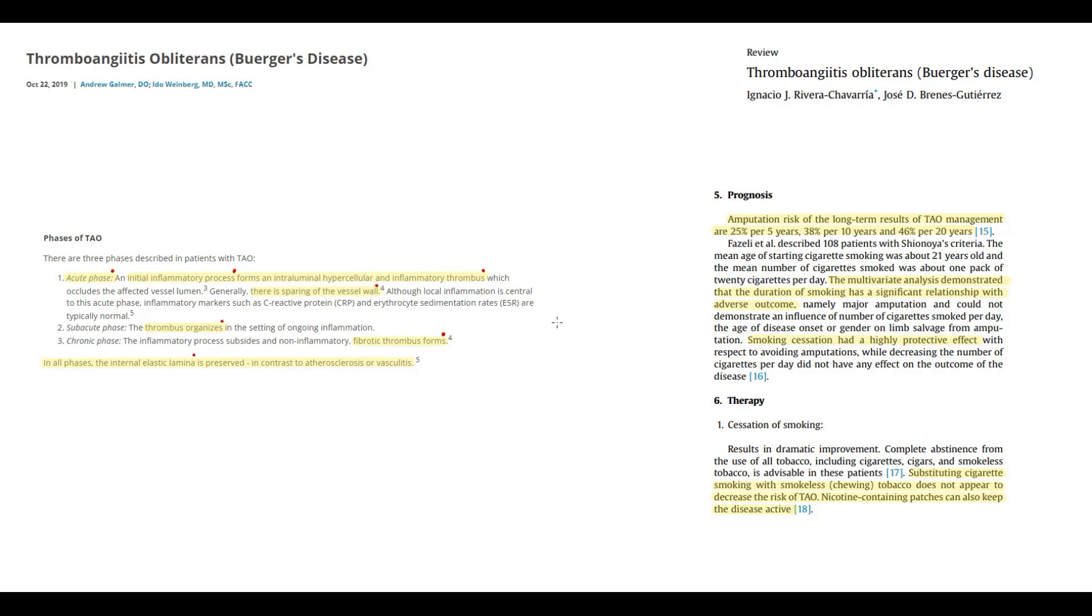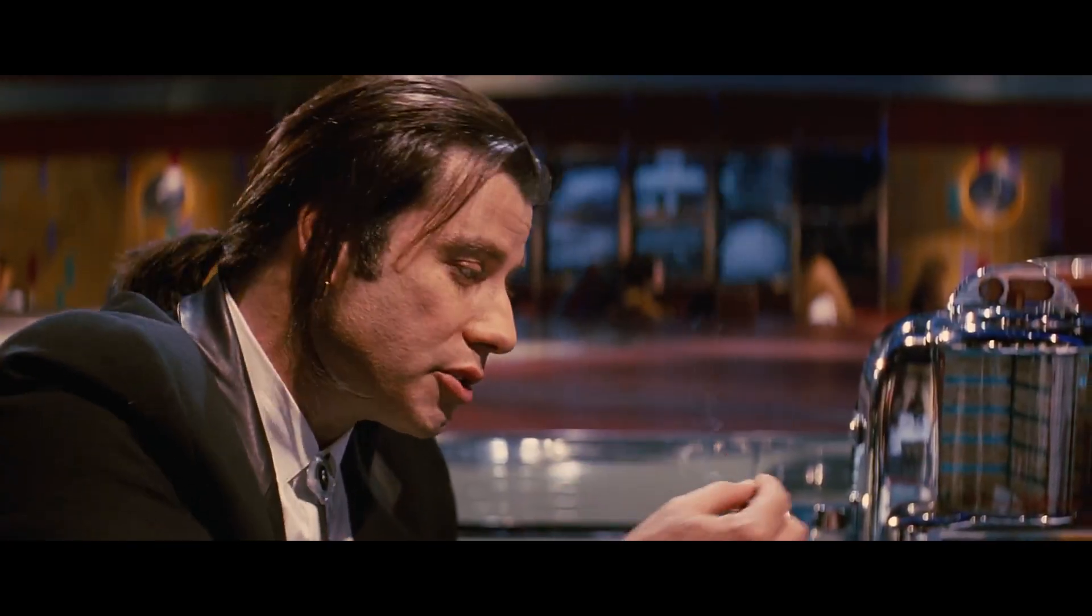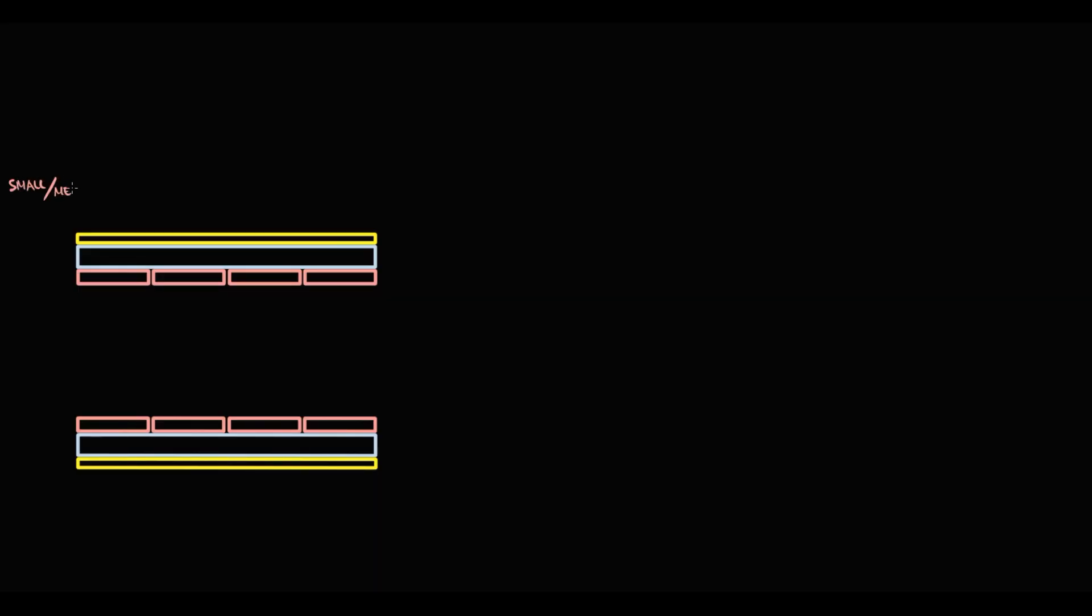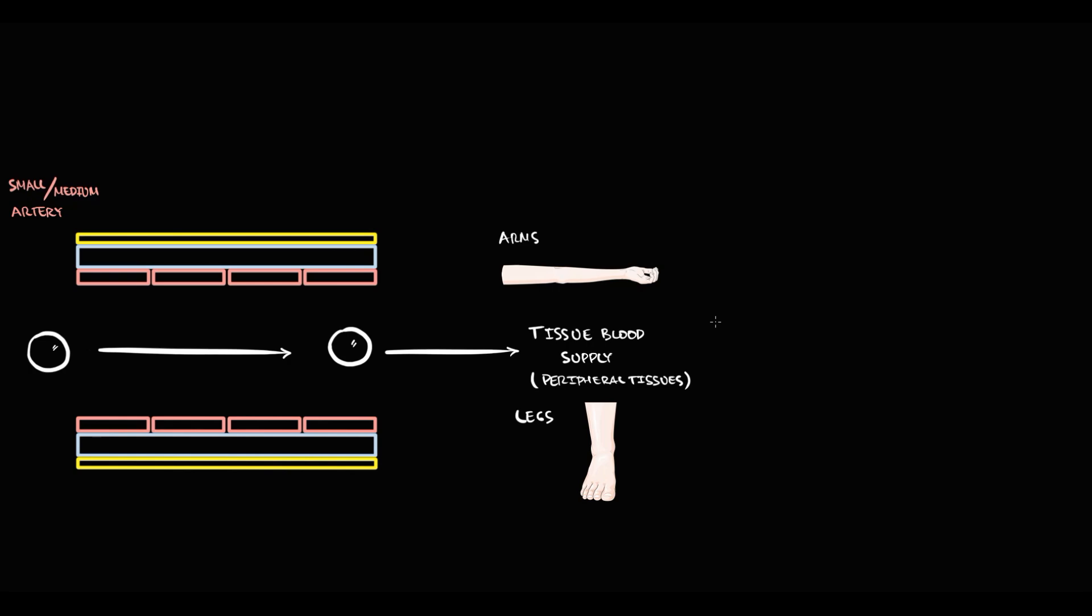But why are these pathological changes in the blood vessel so dangerous? Here we have a small or medium-sized artery. The function of arteries is to supply blood to tissues. In this case, let's take peripheral tissues as extremities, simply because they are extremely sensitive to any changes in blood flow. Let's suppose that this blood vessel delivers blood to arms and legs.